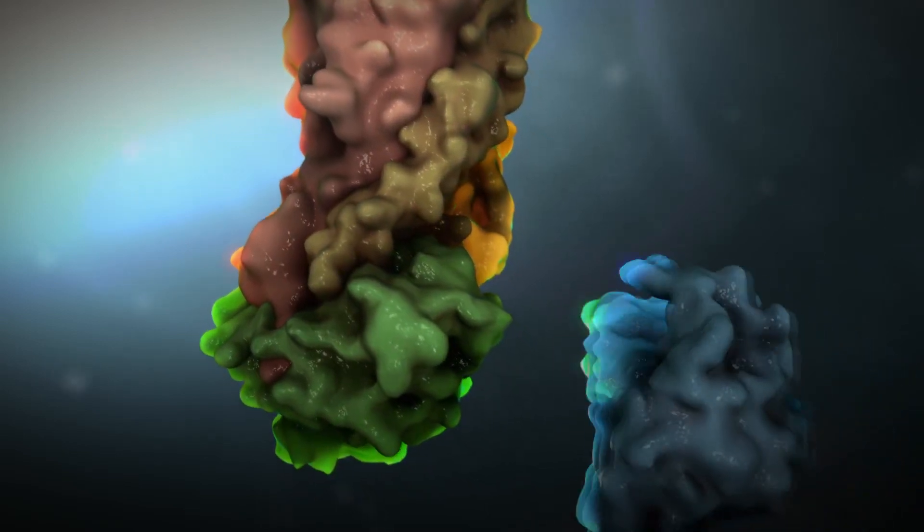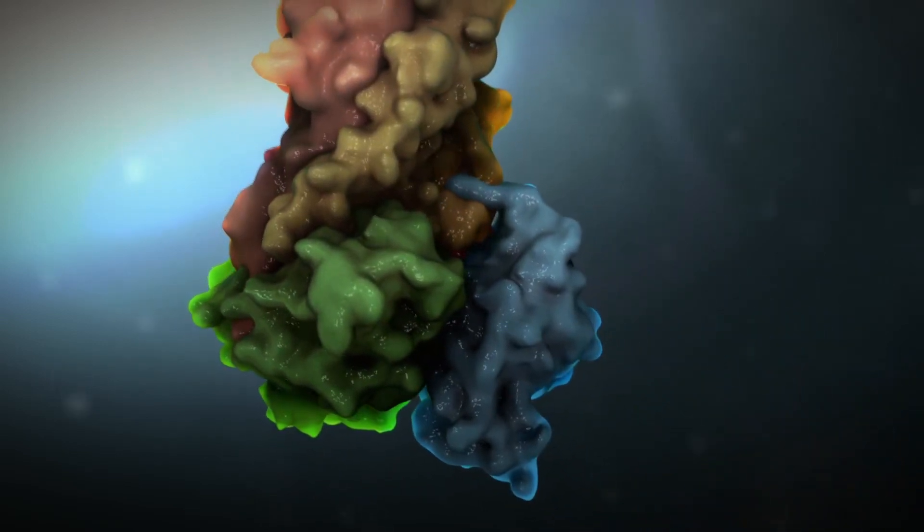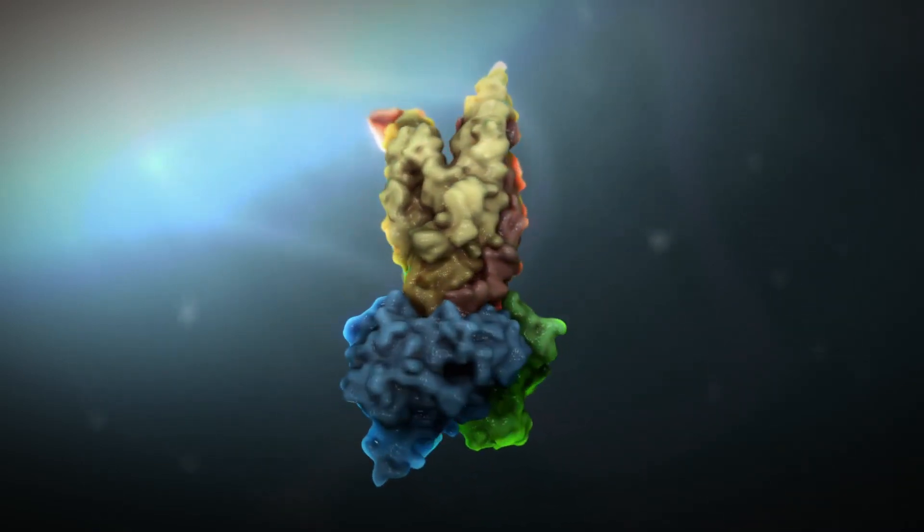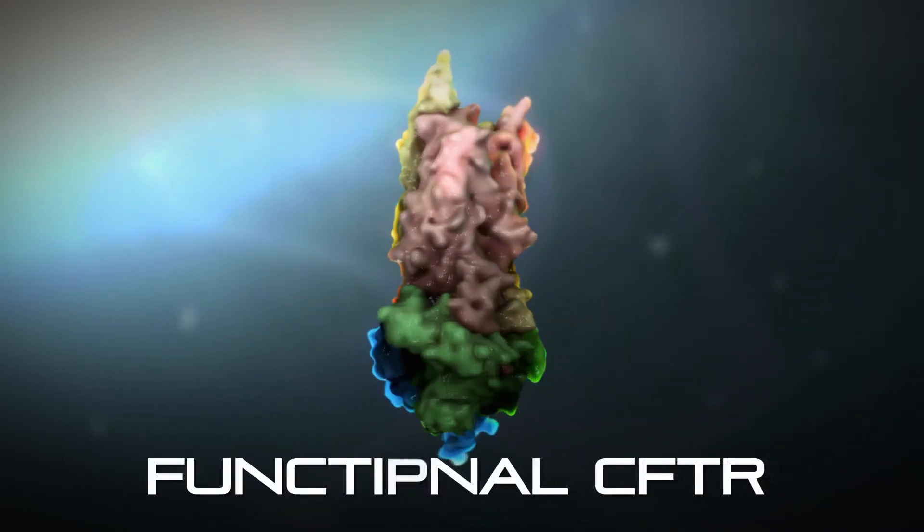When the F508 building block is present, the protein folds properly and is moved to the cell surface, where it then functions as a chloride channel that balances salt and water at the surface of the cell.